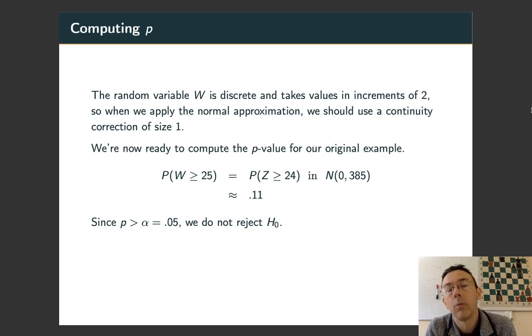Let's get back to our example. We want to apply a continuity correction if we want to be a bit more accurate on this. The random variable W is taking values in increments of 2, so we're going to use a continuity correction of step of size 1. In particular, to get the probability that the discrete random variable W is greater than or equal to 25, we're going to take the probability of getting a z-score greater than or equal to 24 in a normal distribution with mean 0 and standard deviation 385. And so, I did that in R using a PNORM function and I got about 11%. That is not a particularly small value of P. In particular, it's greater than the alpha that we set at the beginning of this problem of 0.05 and therefore we're not able to reject H0. Even though the sample data seemed to indicate that the median of the population was greater than 5.5, there is not sufficient evidence to conclude that.